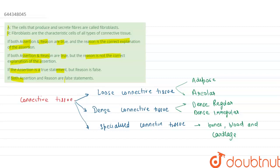In all the connective tissues, a special type of cell — that is fibroblasts — is present. These fibroblast cells secrete fibers, so the formation of fibers takes place by fibroblast cells. However, there is a connective tissue in specialized connective tissue which does not contain these fibers, and the example is blood. Blood is a connective tissue which lacks these fibers.